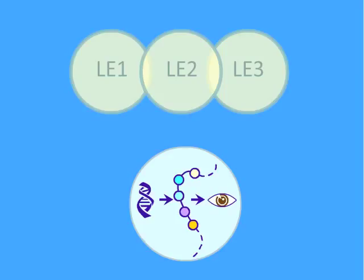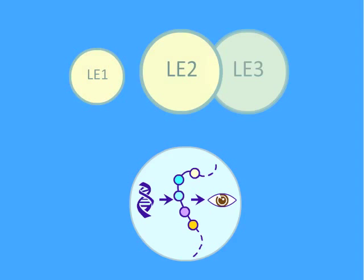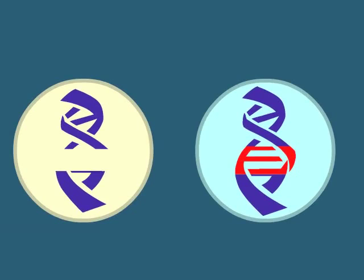Alternatively, a teacher may want to go into greater depth for certain concepts. For example, greater depth in understanding the relationship among DNA, proteins, and traits can be achieved by having students investigate transgenic organisms — how they were made, why they were made, and the potential risks and benefits.